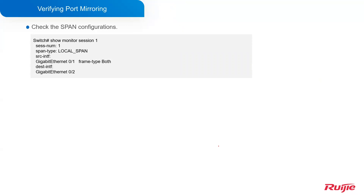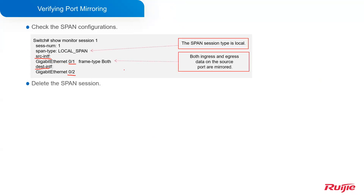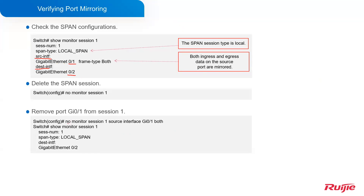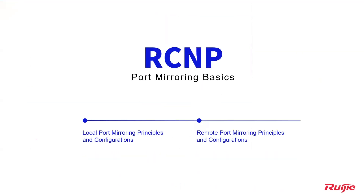To verify the results, use the command: show monitor session 1. You can see the output here — source interface G0/1 and destination interface G0/2. If you want to delete the session, the command is: no monitor session 1. And if you want to remove port G0/1 from session 1, the command is: no monitor session 1 source interface G0/1 both. After running this, you cannot see interface G0/1 in the source interface field. This is about the local port mirroring.